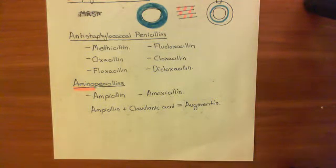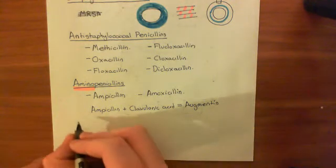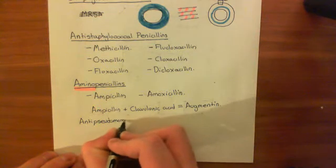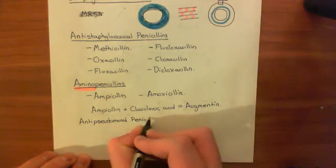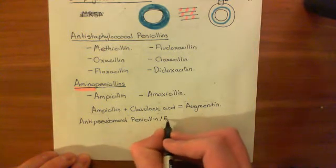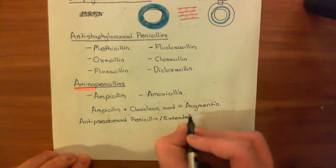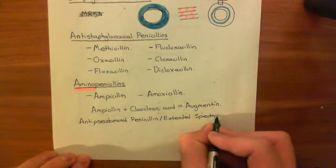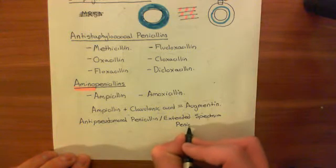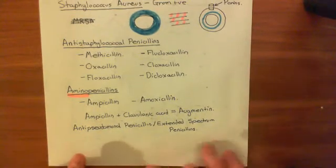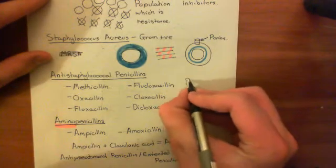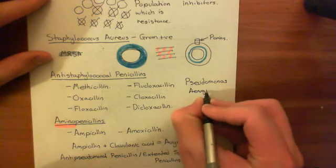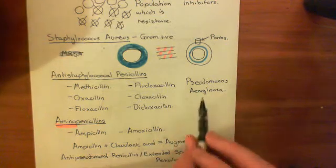The final class of penicillins is known as the anti-pseudomonal penicillins, or extended-spectrum penicillins. These are the best of the best — drugs which are very good at getting through porins in the outer membrane of gram-negative bacteria. They're called anti-pseudomonal penicillins because Pseudomonas aeruginosa is a gram-negative bacterium that is extremely resistant to antibiotic treatment.